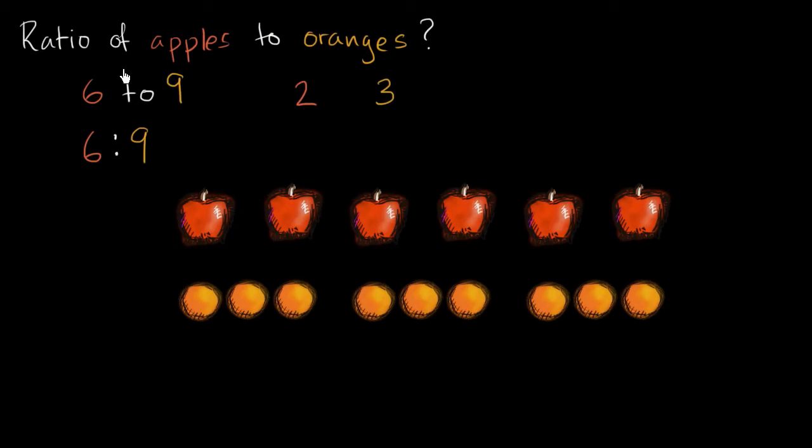So we could also say that the ratio of apples to oranges is two to three. Or if we want to use this notation, two to three.